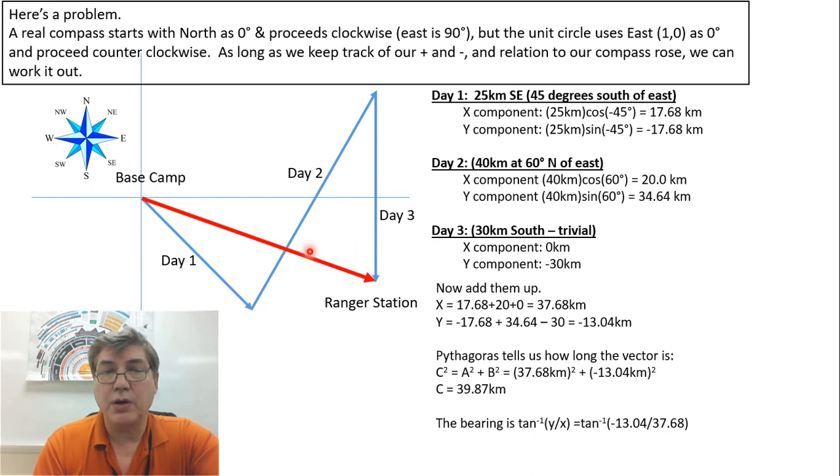We know what its length is, but we really want this angle. If we had gotten it first, we would have looked at the opposite from this angle is our y displacement in the negative direction, and the adjacent to the angle is our x. So the tangent of the angle is the ratio of these.